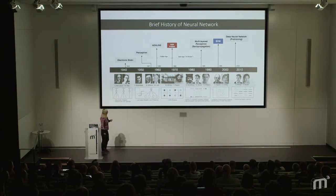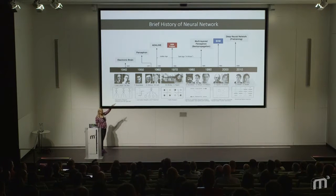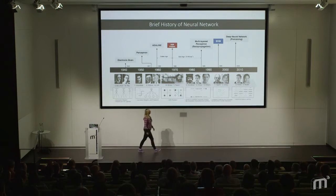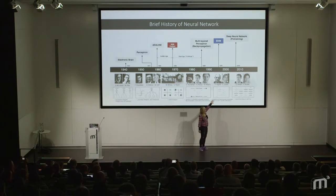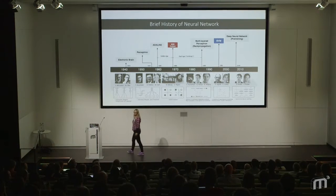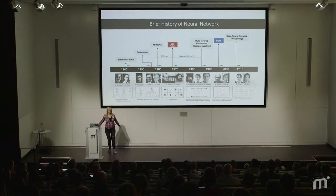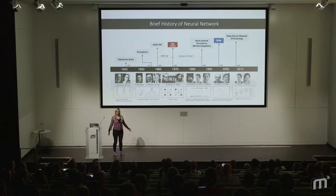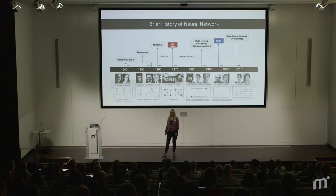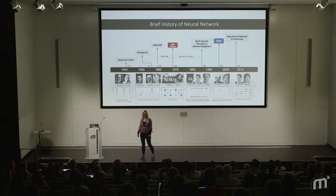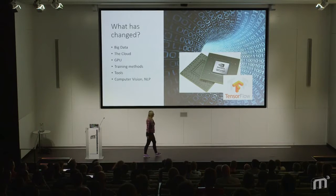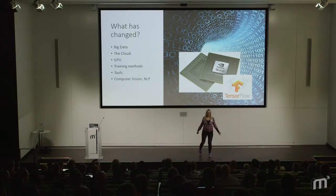Neural networks are not a new thing. The first idea of mimicking the brain was in the 40s. This is a very recent thing that they actually started to work. So what changed? What's different now that wasn't there for 60, 70, almost 80 years? We have a huge amount of data and much more computing power. We live in a time when we have tons of data — every company is gathering data.